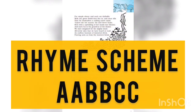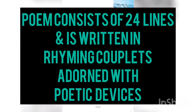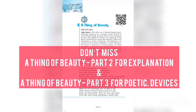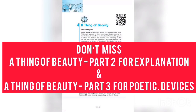'A Thing of Beauty' is written in rhyming couplets — a couplet meaning two lines — with the rhyme scheme AABB CCDD and so on. There are a total of 24 lines in this excerpt, and many beautiful poetic devices are used, such as alliteration, enjambment, and imagery. We will go into these in an elaborate manner in the next video.